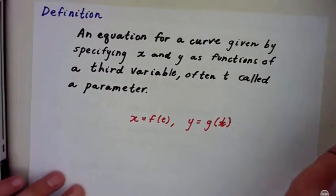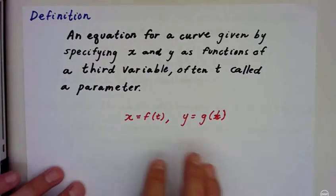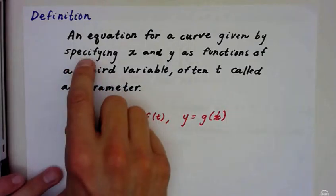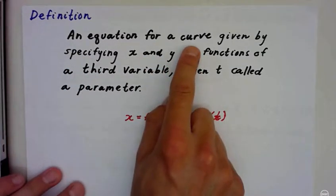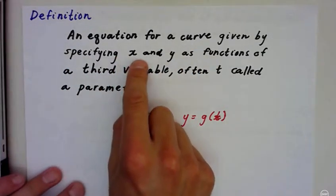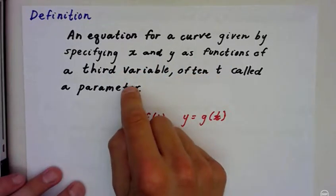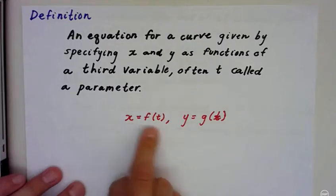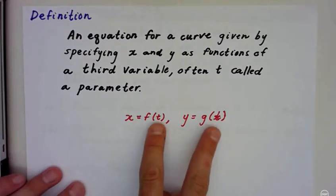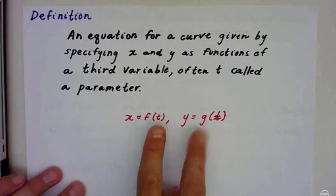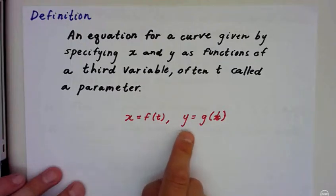So the first thing we need to really talk about is what is a parametric equation. It's an equation for a curve given by specifying x and y as functions of a third variable, often called t the parameter. So we're taking x and y and we're defining them as other functions, not just specific numbers. So x is going to equal f of t, y is going to equal g of t.